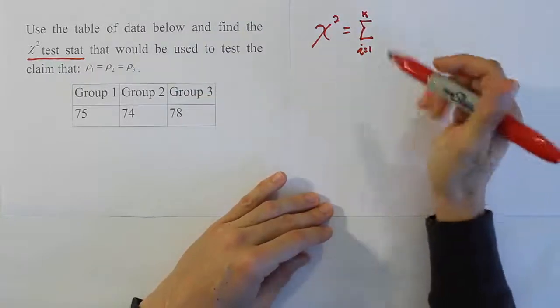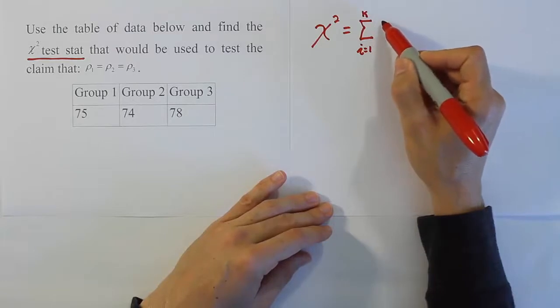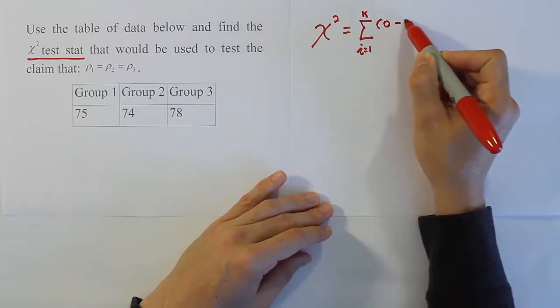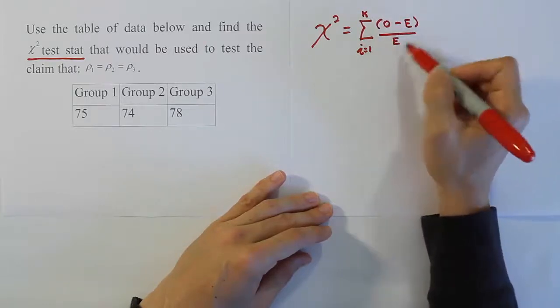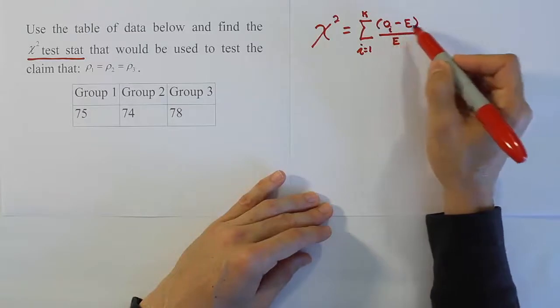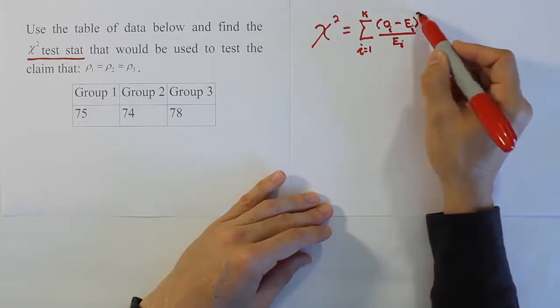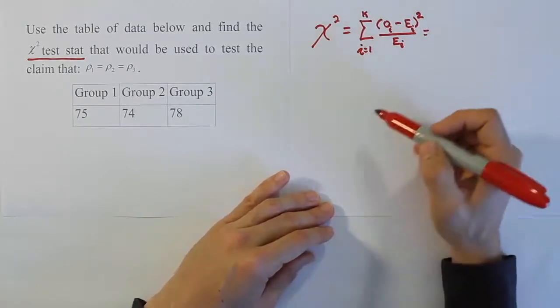The formula written out in symbols would be: sum from i equals 1 to k, k being the number of categories or groups you have, in this case we have three groups. Then we have the fraction, observed minus expected divided by expected. All of this is next to the summation with little subscripts i. And then the top part here is squared. That's your formula for the chi-squared test statistic.